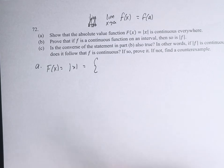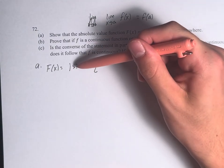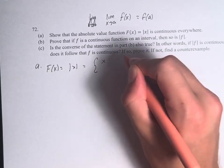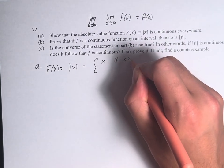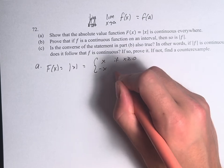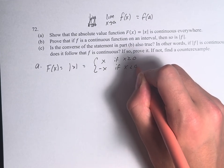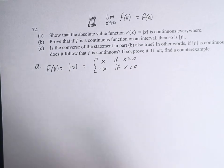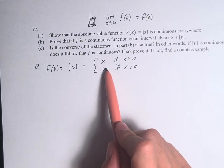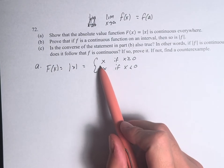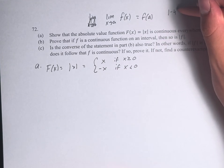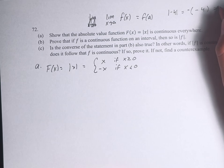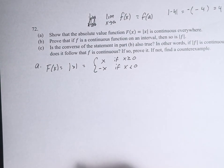The absolute value of x equals x if x is greater than or equal to 0, and negative x if x is less than 0. If x is positive, we can just drop the absolute value. But if it's negative, we have to take negative x — the absolute value of negative 4 is negative negative 4, or positive 4. That's how we have to think about this.